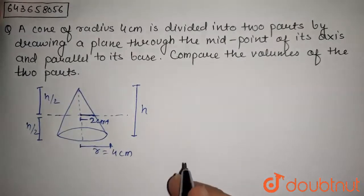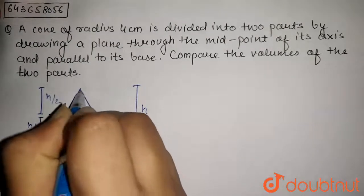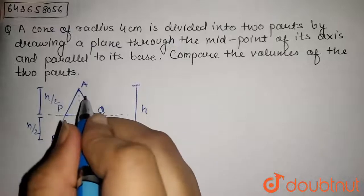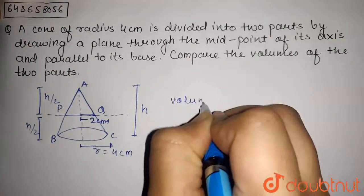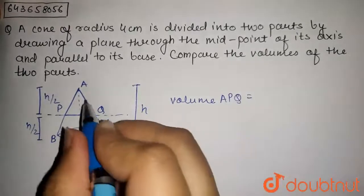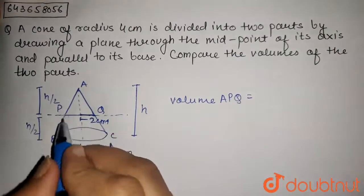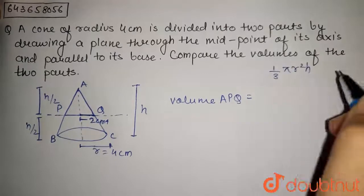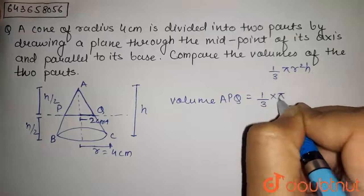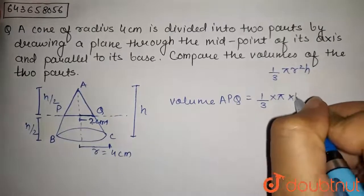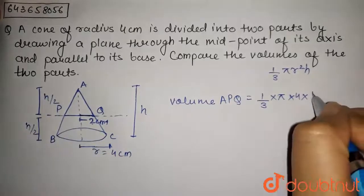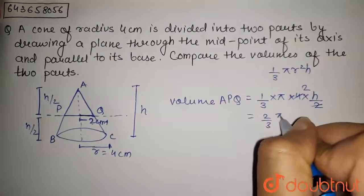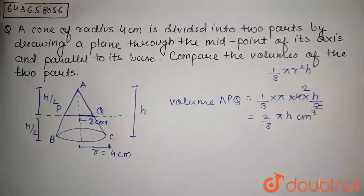We need to compare the volumes of the two parts. First, we find the volume of the upper part, labeling it A, B, C, P, and Q. The part APQ forms a small cone of radius 2 cm and height h/2. Using the formula for the volume of a cone, (1/3)πr²h, we get: (1/3) × π × 2² × (h/2), which simplifies to 2πh/3 cm³. This is the volume of part APQ.